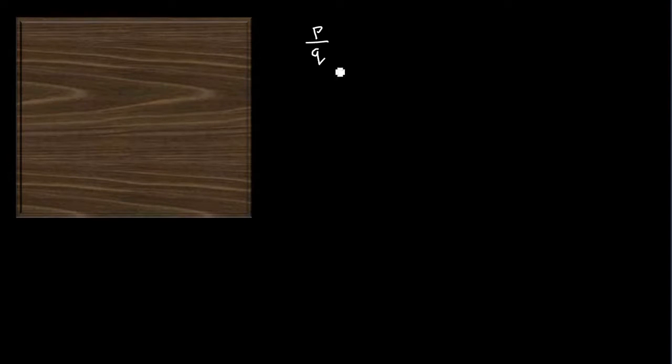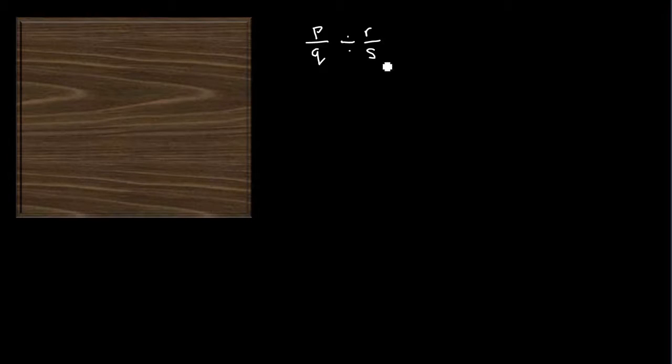Now I'm going to show you the algebra that allows us to do this inversion — to change a division into a multiplication. Let's represent the dividend by p over q, where p stands for an integer and q is the integer that divides into p — p is the numerator, q is the denominator. And we divide by another fraction, which we'll call r over s, where r is any integer and s is any integer as well.